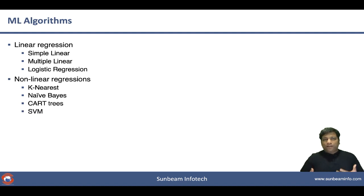Once the features are selected, we are going to start building the model where we need different algorithms. The algorithms like nonlinear and linear regressions, for example, we are going to use simple linear, multiple linear, logistic linear regressions, and k-nearest neighbors, naive Bayes, CART trees, and SVM like nonlinear regressions.